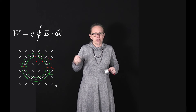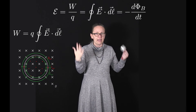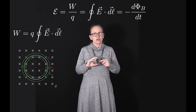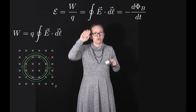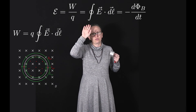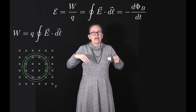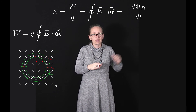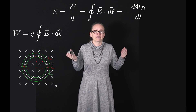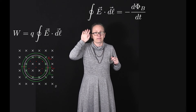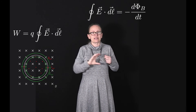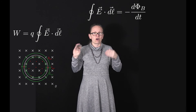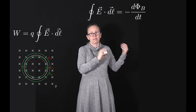There is a relationship between work and the voltage or EMF induced in a loop: voltage equals work per unit charge. So the EMF equals W over q, which equals the integral around the closed loop of E dot dl. Faraday's law tells us this EMF is given by minus dΦ_B/dt. So another way of writing Faraday's law is: the integral of E dot dl around a closed path equals minus dΦ_B/dt. This lets us calculate the strength of the electric field induced by a changing magnetic flux.